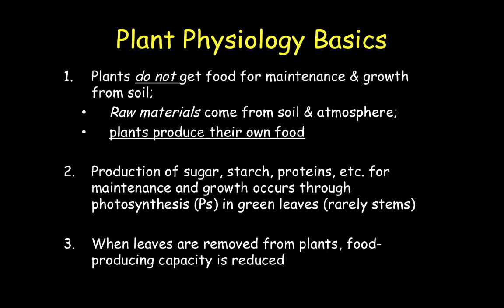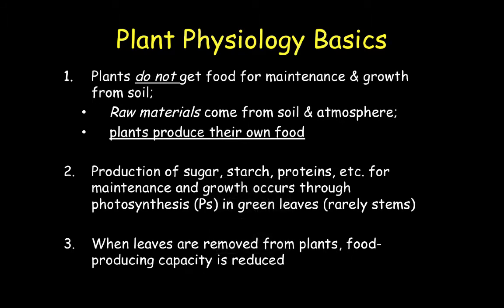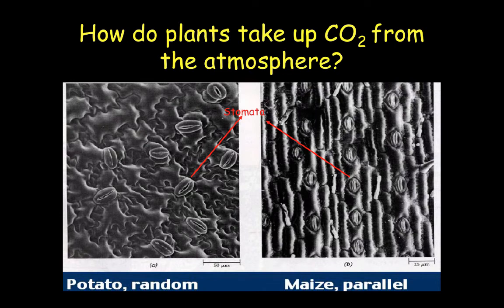The photosynthetic process is going to produce sugar, starch, proteins, and a lot of other compounds that help the plant maintain and grow. Our annuals and perennials are the two categories we'll really focus on. When leaves are removed from plants, the ability for that plant to go through photosynthesis is greatly reduced, so rangeland managers strive to control the amount of leaf material associated with a plant. Plants are going to take up carbon dioxide from the atmosphere through the stomata.